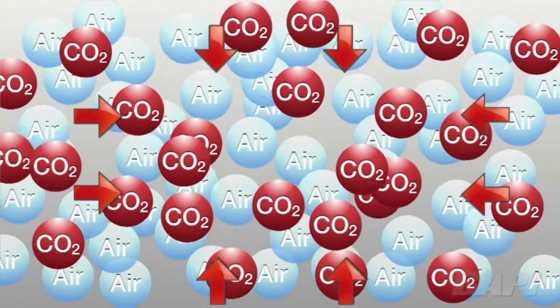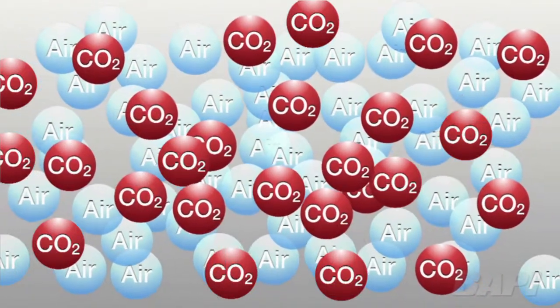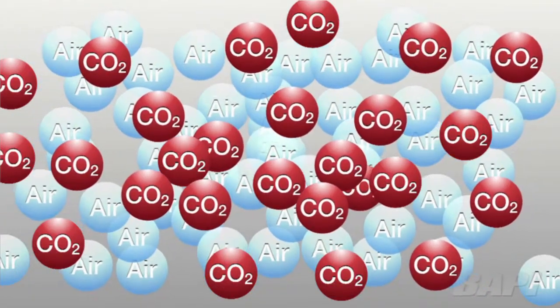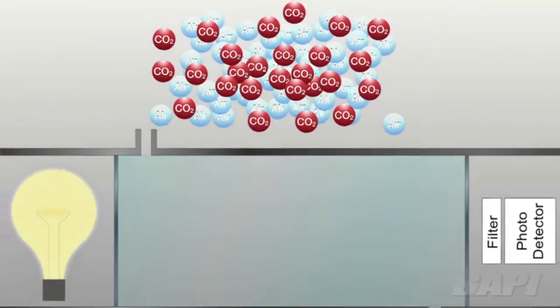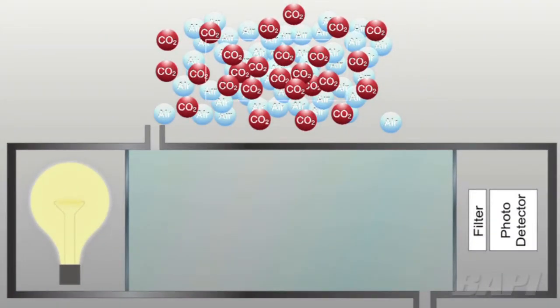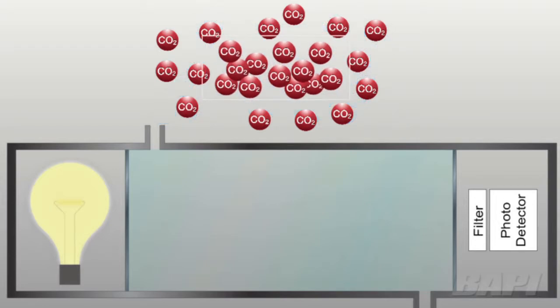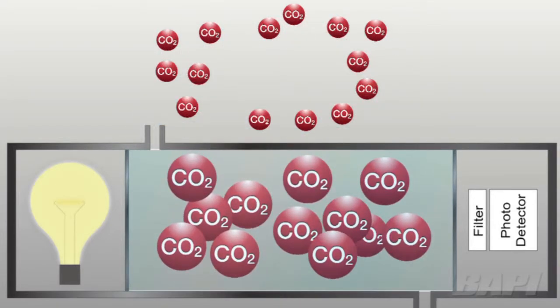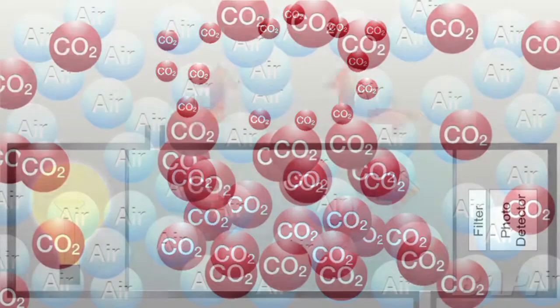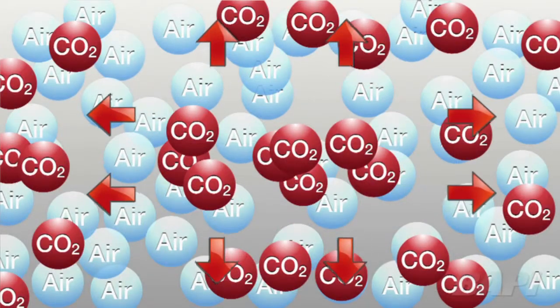Let's use air with a CO2 concentration of 1000 ppm as an example. At high pressure or low temperature, there are more air molecules in the sensor's sample chamber. So there will also be more CO2 molecules even though the concentration of CO2 hasn't changed. More CO2 molecules fools the sensor into thinking that the CO2 concentration is higher than it really is.